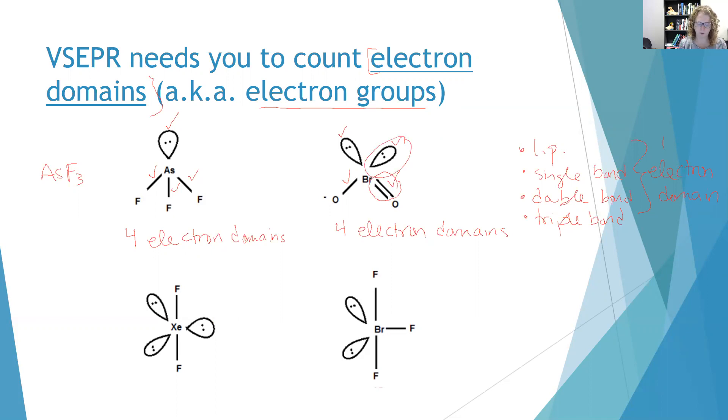So similarly down here, we have one, two, three, four, five electron domains. And so is this one, one, two, three, four, five.